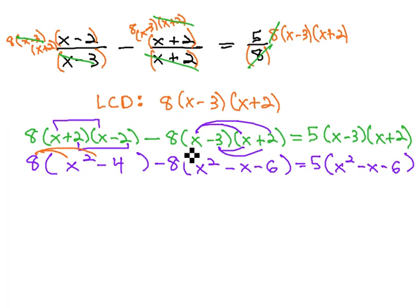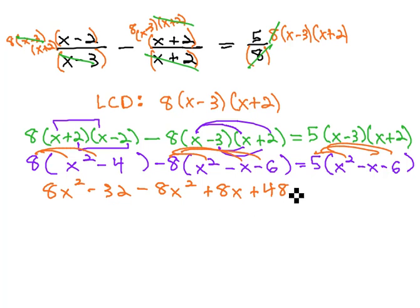And now we're ready to distribute, giving us 8x² - 32 - 8x² + 8x + 48 = 5x² - 5x - 30.